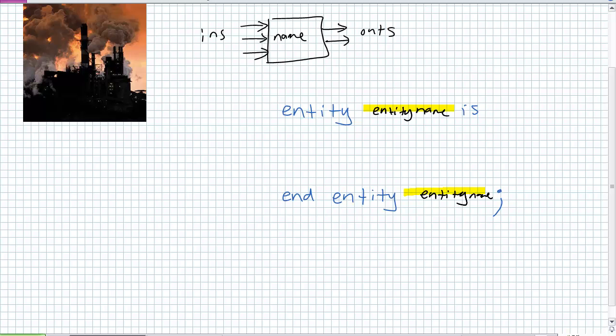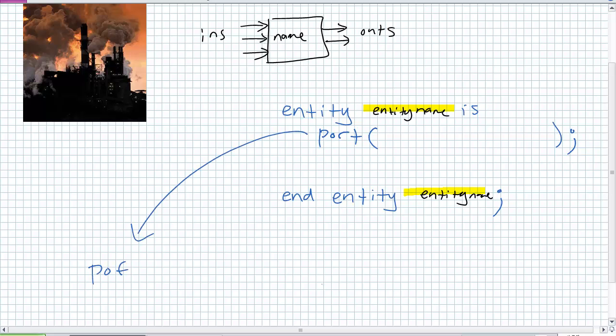Entity factory is stuff in the center. End entity factory semicolon. So this is the start. This is the end. What's in between? It's what's known as the port statement. The ports, that's the ins and that's the outs. So the port statement needs a little bit of investigation.